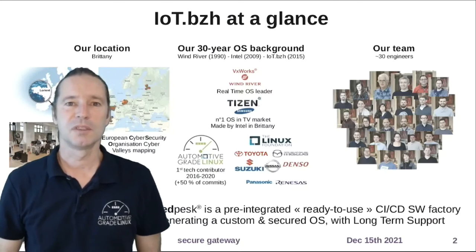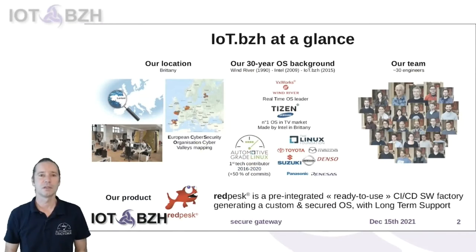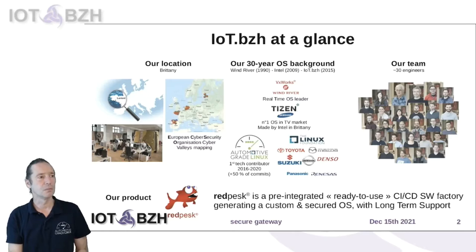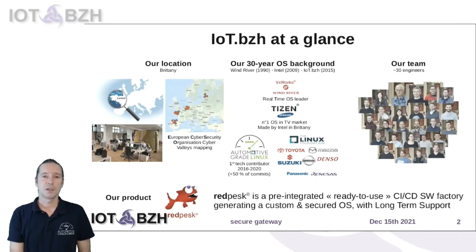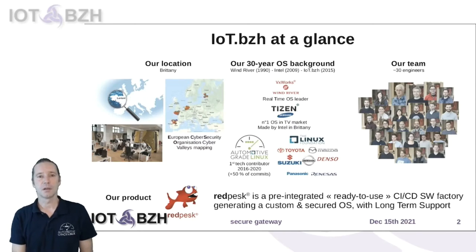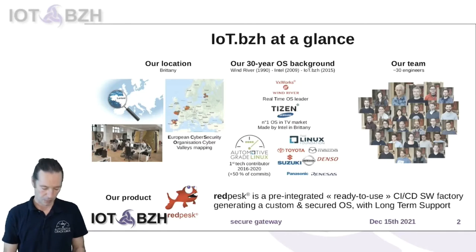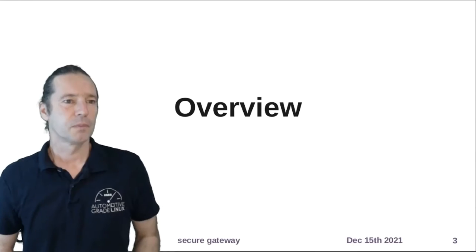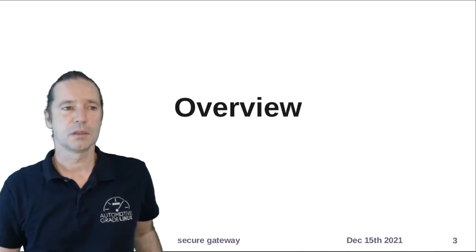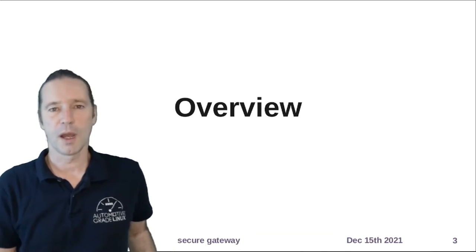I'm from IoT BZH, a company located in France. We worked on AGL for the first version of the application framework, and we use it to create a new distribution named RedPaskOS, which is intended to be a long-term support distribution for embedded systems. I will now present the SecureGateway and why we built it.